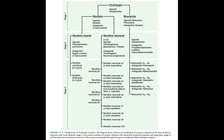There's a lot going on with the cholinergic neuron slide — we don't have to learn all of it, but here are the key points. There are two main types of cholinergic receptors: nicotinic receptors and muscarinic receptors. The nicotinic receptors are named because nicotine strongly binds to them, and muscarinic receptors are named because muscarine strongly binds to them.